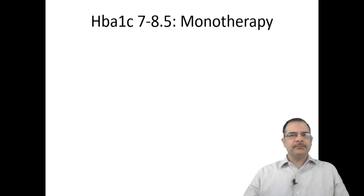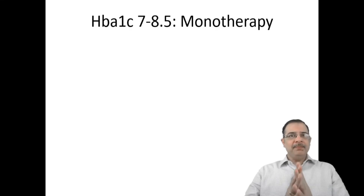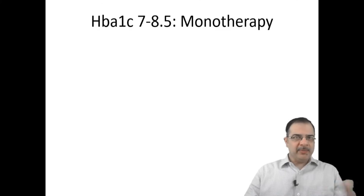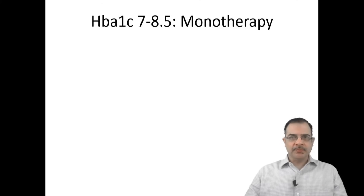Starting with monotherapy: if a patient comes with HbA1c of 7 to 8.5, we can start monotherapy. Importantly, remember it is the patient's decision whether to start medication. If the patient says their lifestyle is very bad and they will improve it, maybe after a month or two if HbA1c or glycemic control is not achieved, then the patient can opt for monotherapy. So do consider the patient's preference when starting monotherapy.